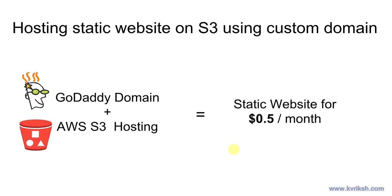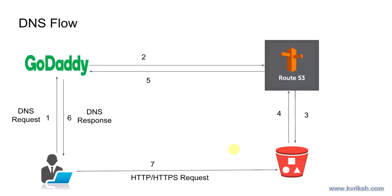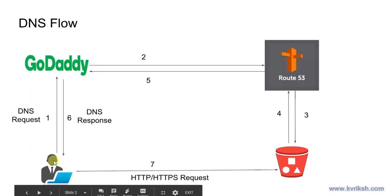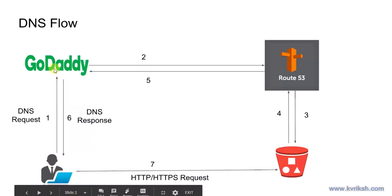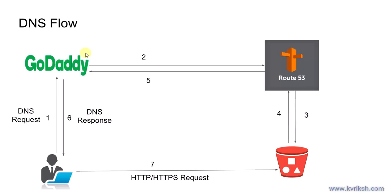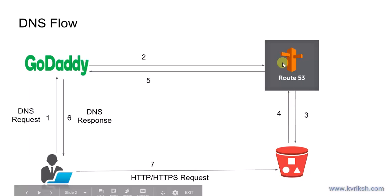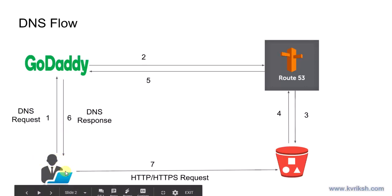Let's understand how the DNS will work in this case. When the end user hits a website domain in their browser — say awscloudtraining.com — as the domain is purchased from GoDaddy, the DNS request will go to GoDaddy's server. We will tell GoDaddy: don't manage DNS yourself, let AWS Route 53 manage the DNS. The request goes to Route 53, which hosts all the DNS for our website, gets the IP address from S3, and the end user's browser will connect over HTTP or HTTPS to the S3 backend where our website is hosted.